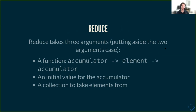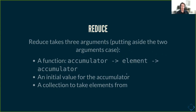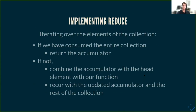Reduce takes three arguments: a function which takes an accumulator and element and returns an updated accumulator; an initial value for that accumulator; and a collection to take these elements out of. To implement reduce, let's write out in words the algorithm. We are iterating over the elements of a collection. If we have consumed the entire collection, we return the accumulated accumulator. If we have not, we combine the accumulator with the head element using our function, and we iterate again with the updated accumulator and the rest of the collection.